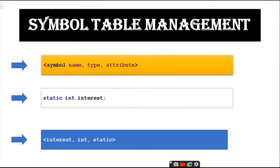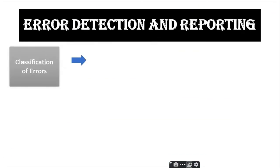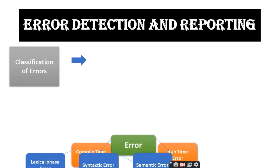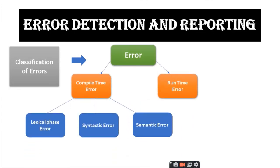Symbol table management and error detection and reporting: each phase can encounter errors. After detecting an error, a phase must somehow deal with that error so that compilation can proceed, allowing further errors in the source program to be detected. There are two types of errors: compile time error and run time error.